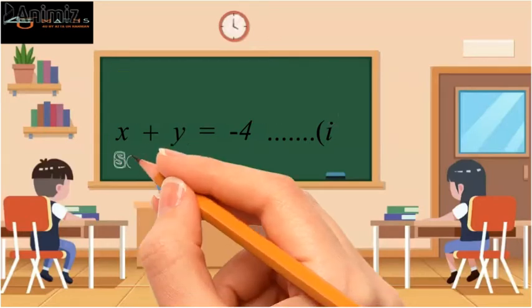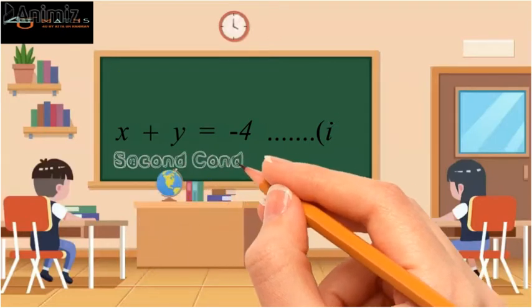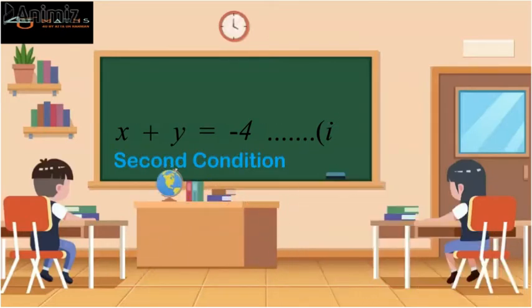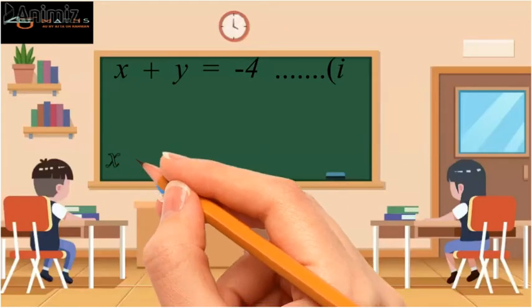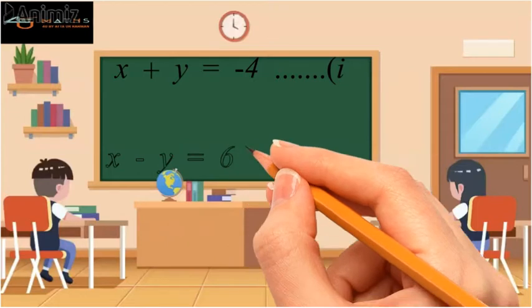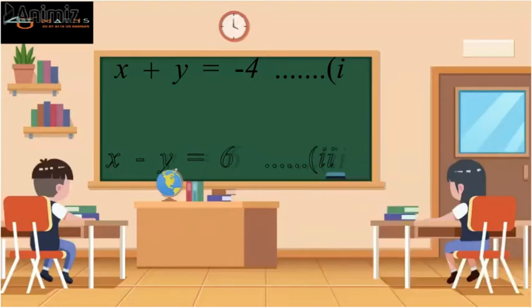Now according to the second condition, the difference of the numbers is 6. So we will write x minus y equal to 6, and mark this as our equation 2.